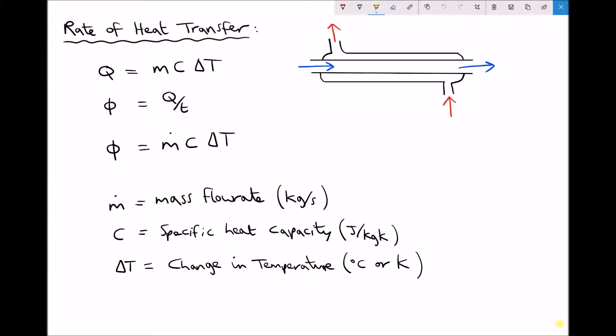Hello, this is Andy from the Engineers Academy. In this tutorial we're going to look at rates of heat transfer and relate that to efficiency of the heat transfer process. In the top left hand corner we have an equation we've already seen: Q equals mc delta T, which we used to determine the amount of energy transferring from a heat source or working fluid into another fluid. As an example, we may have used that to determine the amount of energy required to increase the temperature of water.